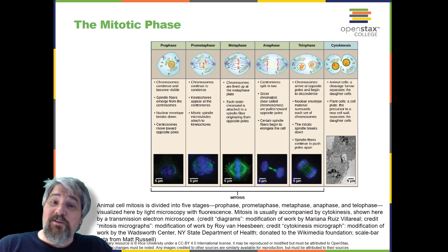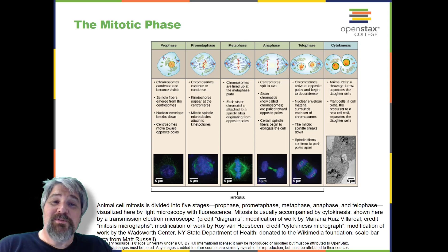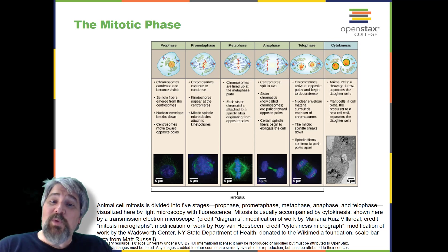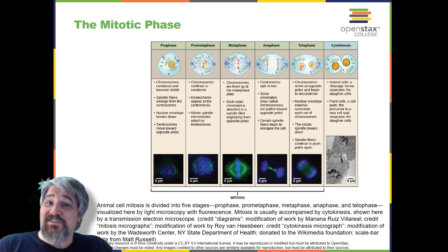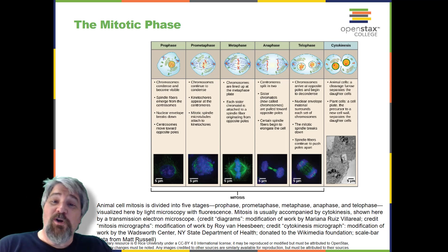During metaphase, all of the chromosomes are aligned in a plane called the metaphase plate, or the equatorial plane, midway between the two poles of the cell. The sister chromatids are still tightly attached to each other. At this time, the chromosomes are maximally condensed.